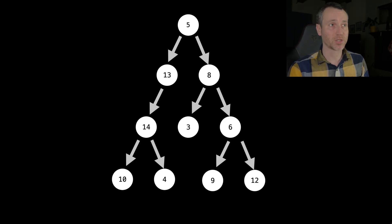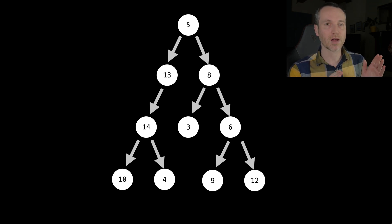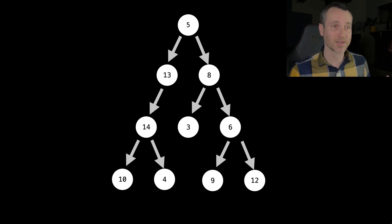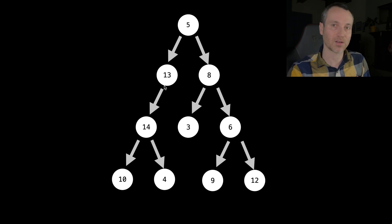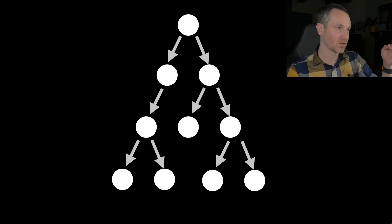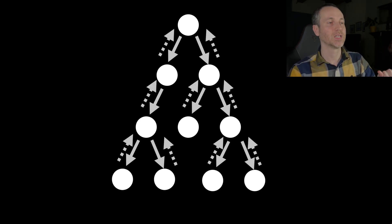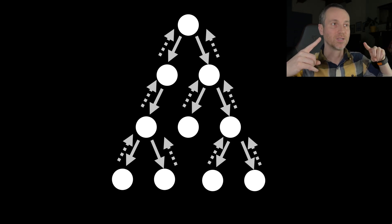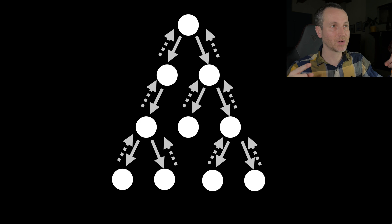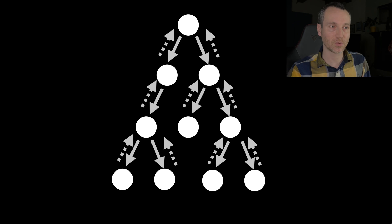We've essentially made a tree structure. Something to note is that all those arrows are solid lines — they're all strong references. There is no cycle here, so everything is safe and things will be cleaned up. As soon as 5 drops, all the other things drop as well. Now we're going to make the children aware of their parent, adding a weak reference pointing back up — if it was a strong reference, we'd have a lot of reference cycles.